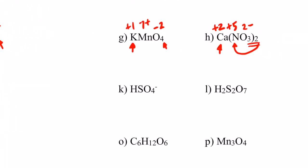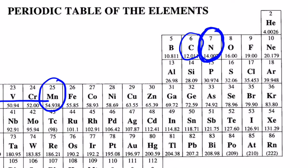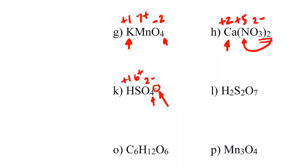Letter k is an ion, so the sum of oxidation numbers equals the charge of the ion, which is negative one. For HSO4-: oxygen is negative two, and four oxygens give eight negatives. We need seven positives to get a net negative one. Hydrogen in group one is positive one, so sulfur must be positive six. Sulfur is in group 16 and can be up to positive six — that works.